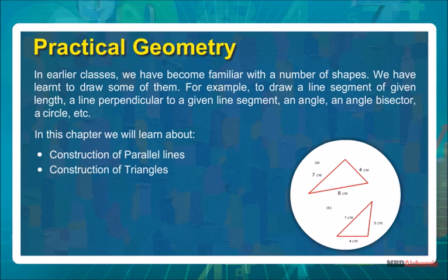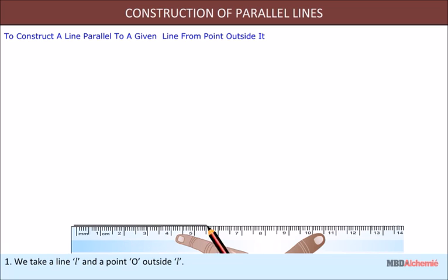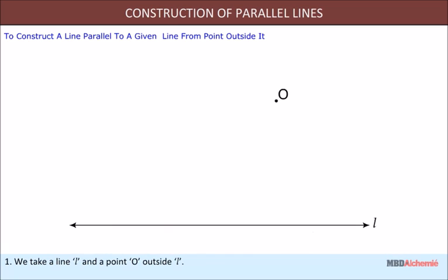In this concept we will discuss how to construct a line parallel to a given line from a point outside it. Step 1: First we take a line l and a point O outside l. Step 2: Now we take any point A on l and join A to O.